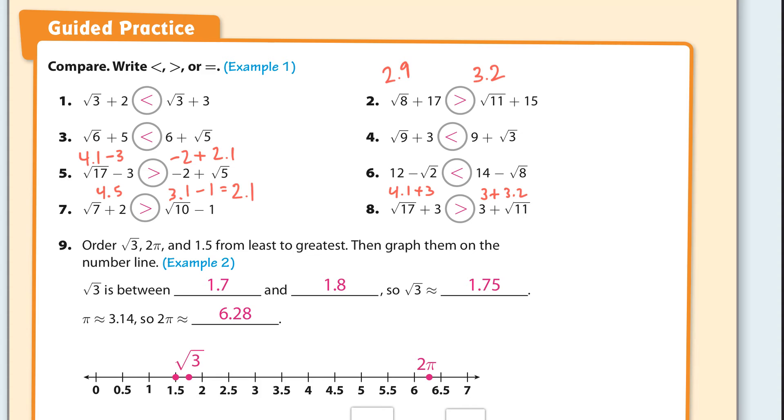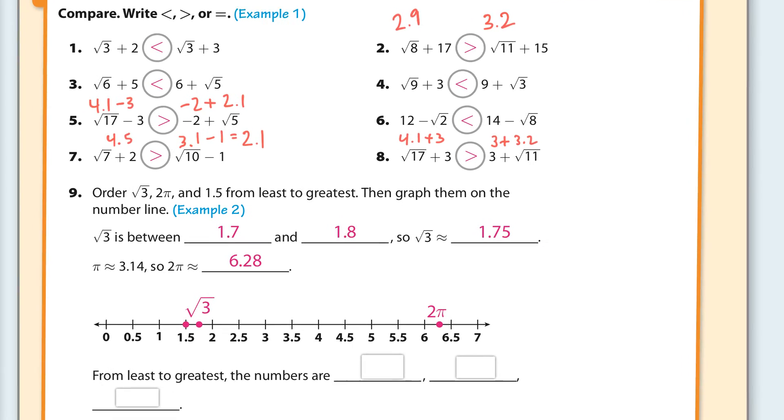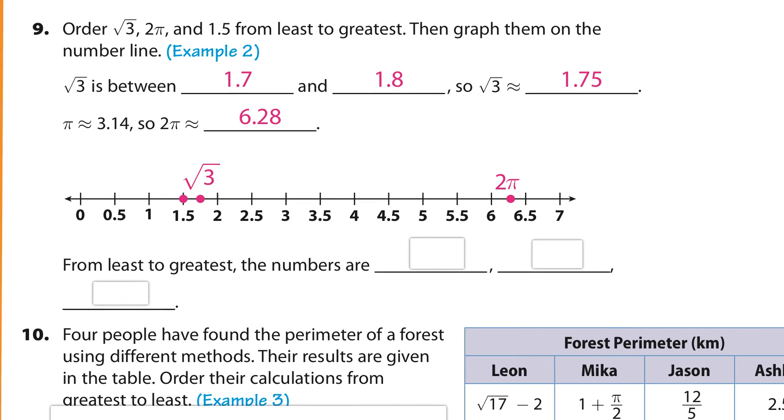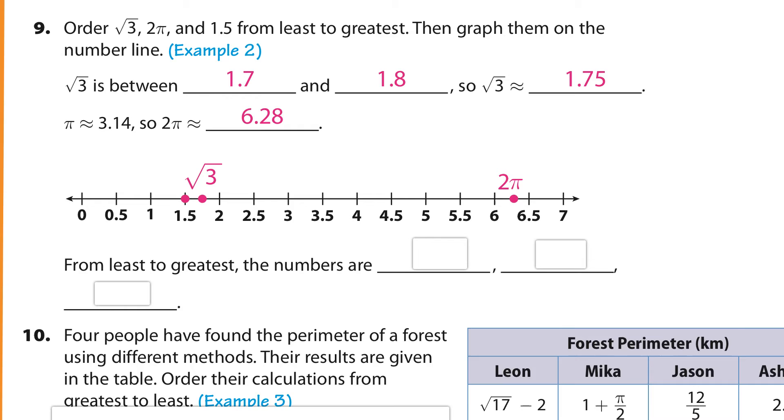On a number line, that's where those different numbers belong. I'll make it bigger. I don't know why I didn't make it bigger earlier. So from least to greatest, the numbers are, and we can visually see this, right? 1.5, the square root of 3, and 2 times pi. There.